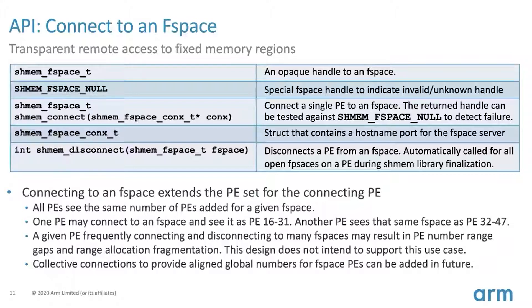When a PE connects to an F-space, every PE that connects to that same F-space sees the same number of PEs, though they may connect in different orders. One PE might see the F-space as PE 16 to 31, another as PE 32 to 47. The implementation doesn't intend rapid-fire connect/disconnect cycles because that leads to fragmentation of PE ranges. The use case is that an application configures itself at startup and then just runs with stable connections. In the future, collective connections could provide globally consistent F-space PE numbers.